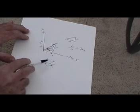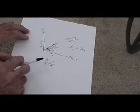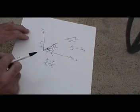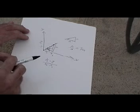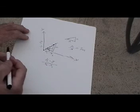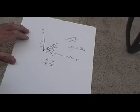So the slope and the tangent are the same thing. In calculus, if you have an equation and you want to find the slope of the line, it's called differentiating. When you differentiate an equation, you're finding the slope of that line.